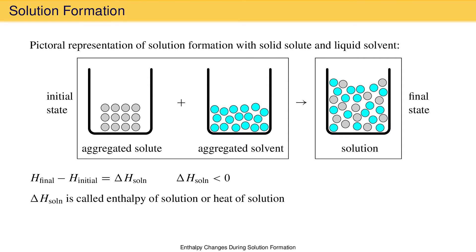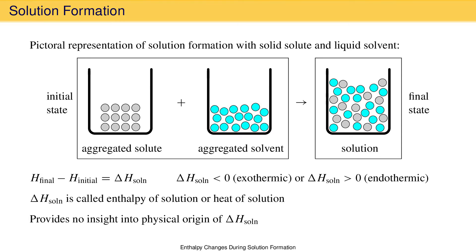The heat of solution can be negative, making the solution process exothermic. It can be positive, making the solution process endothermic. Technically, the heat of solution could be exactly zero, but this is unlikely given the large number of ways to obtain a heat of solution that is not zero. Based on this description, all we really know is that the solute and the solvent have mixed and have either released energy or required an energy input. There's nothing here that gives us any insight into why the heat of solution might be endothermic or exothermic.